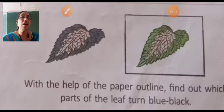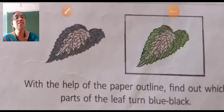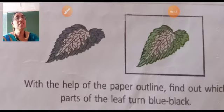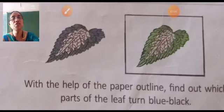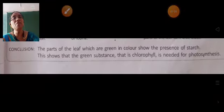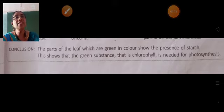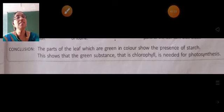With the help of the paper outline, find out which part of the leaf turned blue-black. When we add iodine on the leaf and use the paper outline, we may find that the parts of the leaf which are green in color turn blue-black.